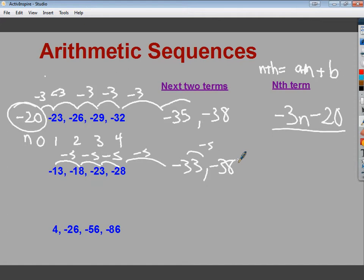So, to find my nth term, my change every time is negative 5. And my 0 term, so I've got to go back, got to add 5 here, would give me negative 8. So, negative 5n minus 8. Pretty simple.